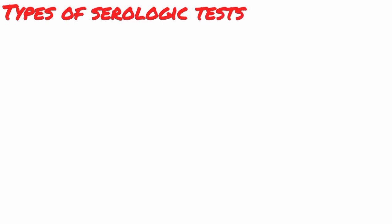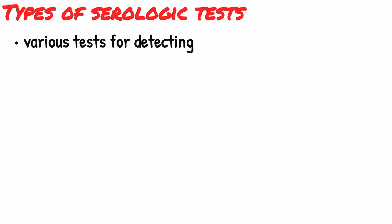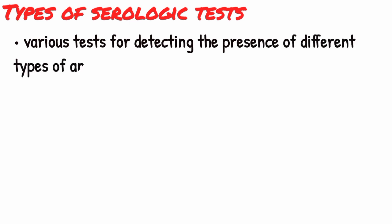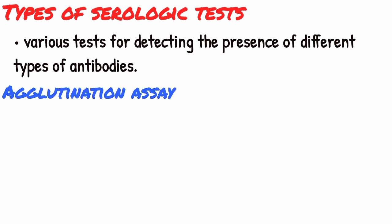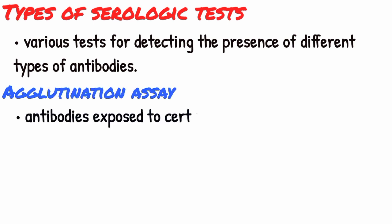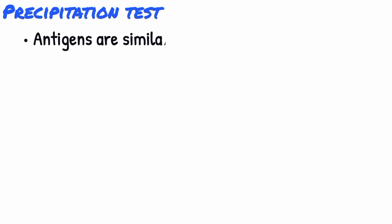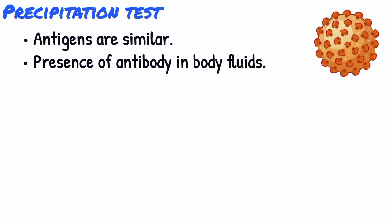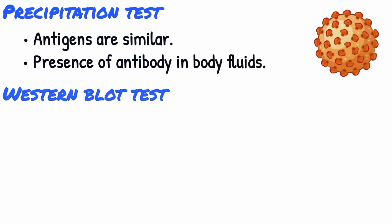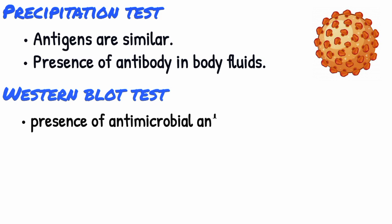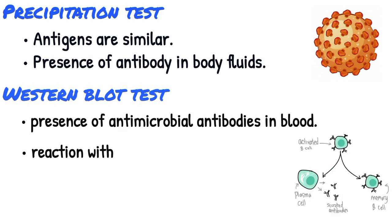What are the types of serologic tests? Antibodies are diverse, so there are various tests for detecting the presence of different types of antibodies. These include: number one, an agglutination assay, which shows whether antibodies exposed to certain antigens will cause particle clumping; number two, a precipitation test, which shows whether the antigens are similar by measuring for the presence of antibody in body fluids; and finally, the Western blot test, which identifies the presence of antimicrobial antibodies in your blood by their reaction with target antigens.